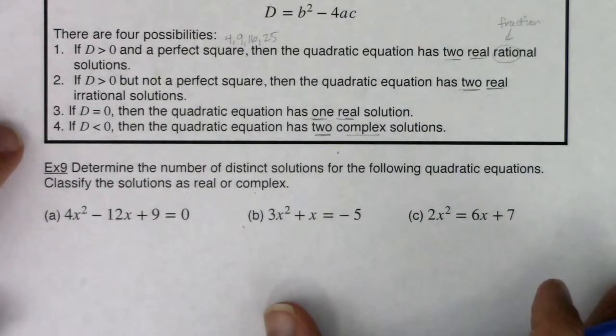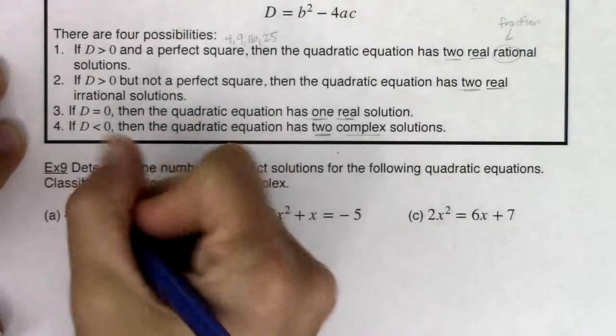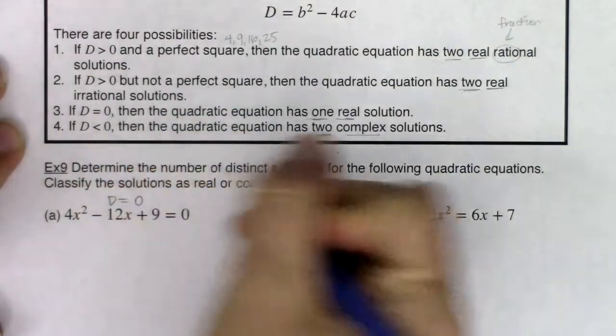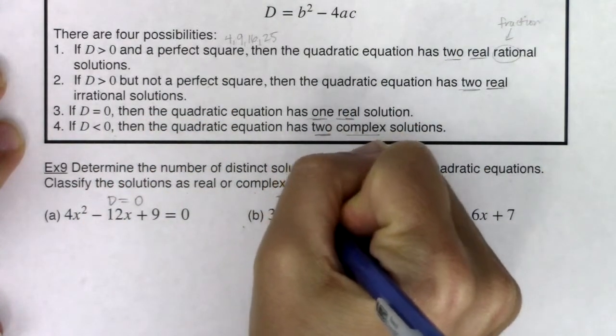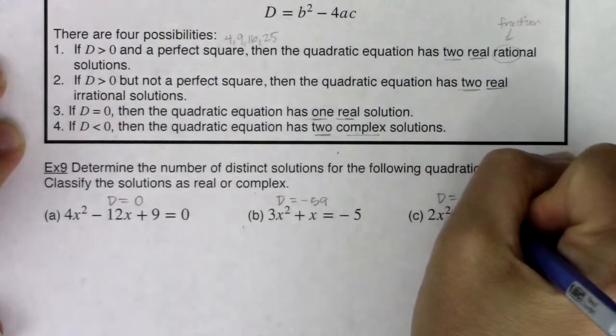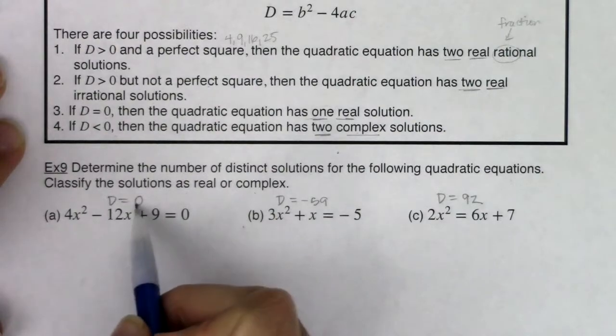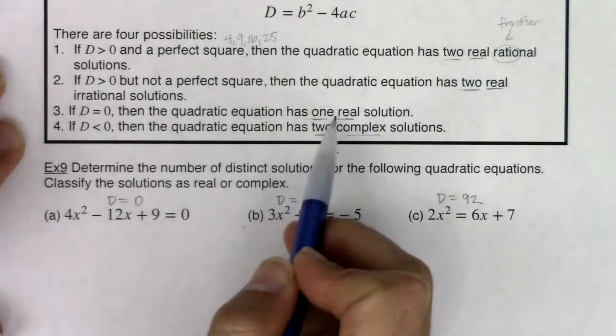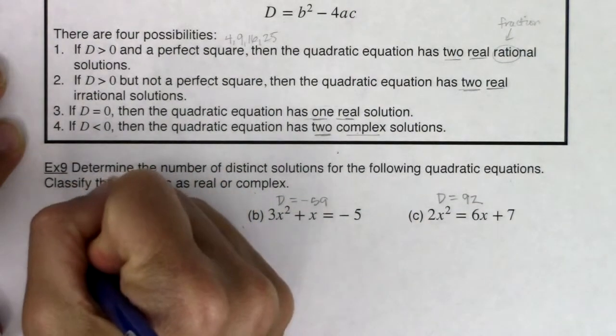Let me move this up so that we have the four possibilities in view, as well as the problems we're dealing with. Just to review our work from example 8, we knew that the discriminant was 0 here, negative 59 here, and 92 here.